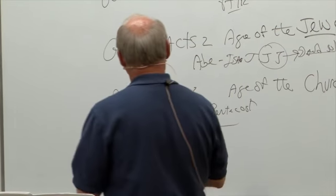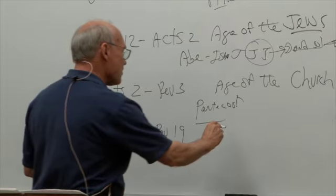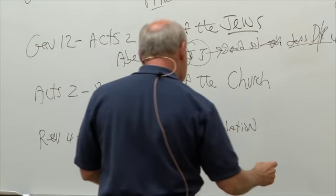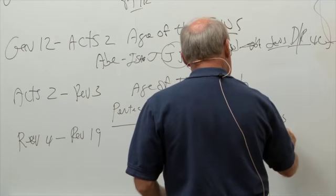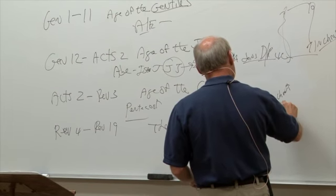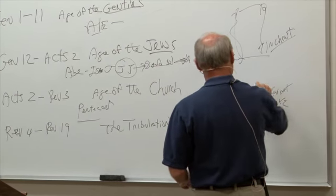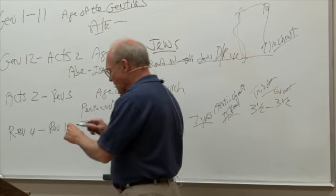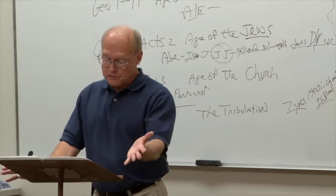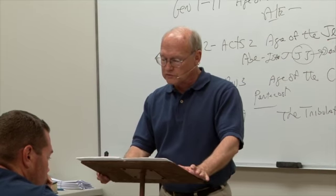The fourth big section begins in Revelation chapter 4 and goes to Revelation 19 — called the tribulation. After the church is taken off the face of the earth, there is a seven-year time period: a peace pact made with the Antichrist and the nation of Israel. The first three and a half years is called the tribulation; the last three and a half years is the great tribulation. We'll go into more detail on that later.